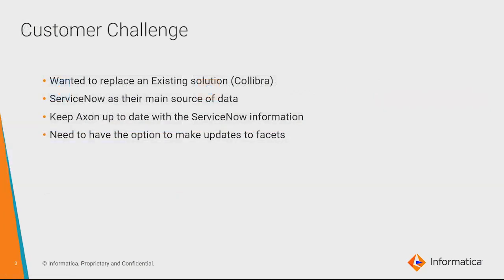This customer replaced Collivre with Axon, and they had all their information in ServiceNow, which would correspond to Axon facet roles, objects, and relationships. Whenever they changed information there, they wanted to see how those changes were reflected in Axon. This customer has a very mature data governance program, which is why they wanted to do this integration with Axon.